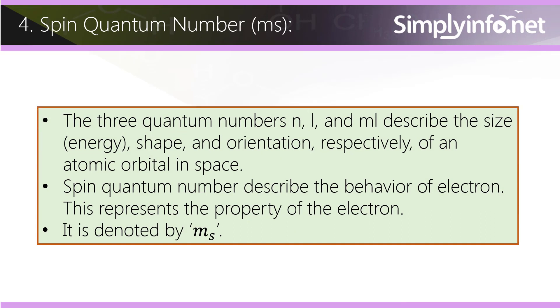Spin quantum number ms. The three quantum numbers n, l, and ml describe the size, energy, shape, and orientation respectively of an atomic orbital in space.